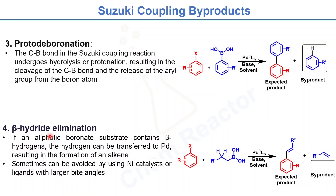The fourth byproduct is beta-hydride elimination. This is also a very common byproduct in Suzuki coupling when you have aliphatic boronic substrates containing beta-hydrogen atoms, which can be transferred to the palladium, resulting in the formation of an alkene as a byproduct. This can sometimes be avoided by using a nickel catalyst or ligands with larger bite angles.